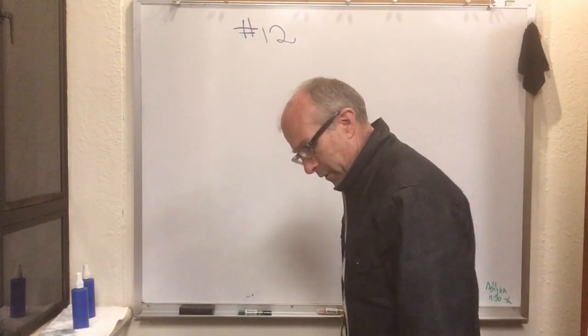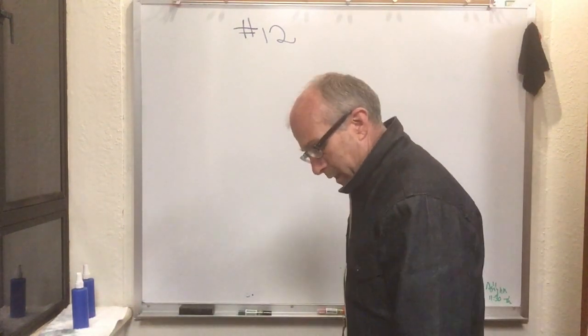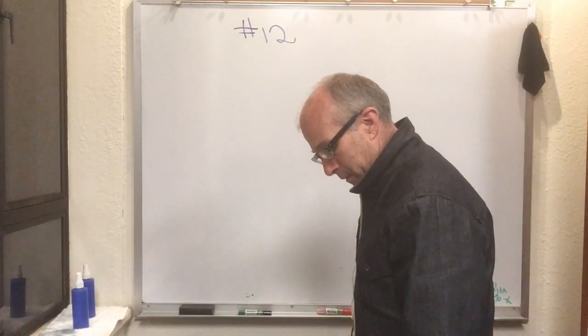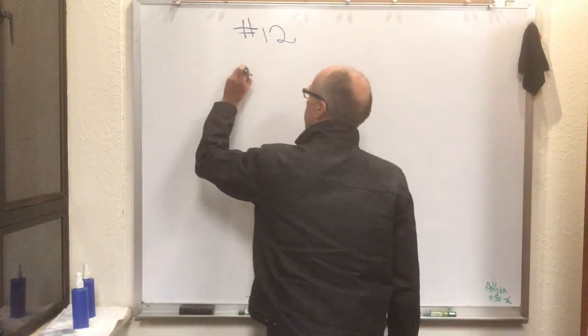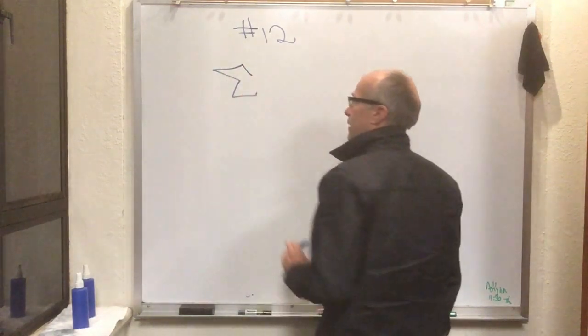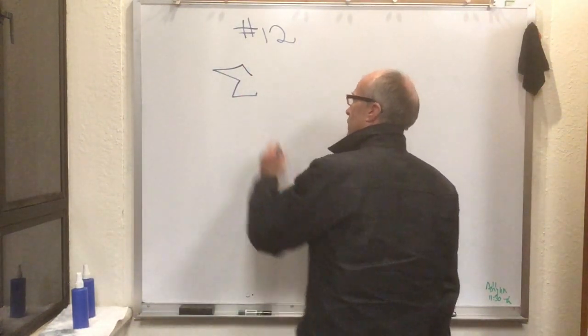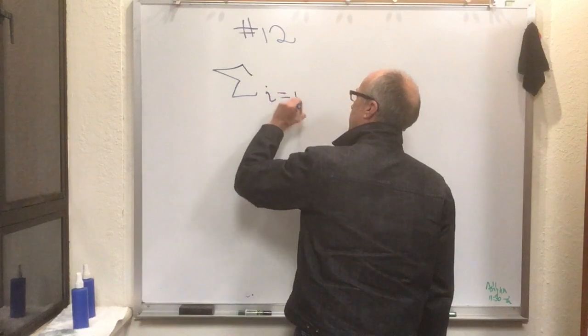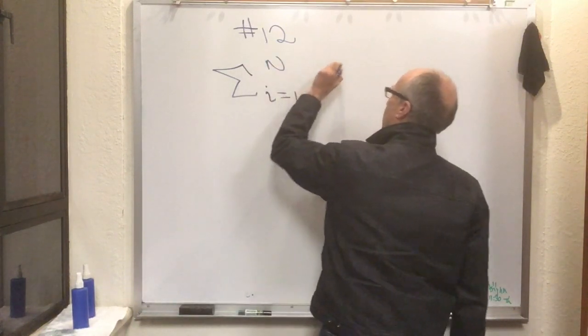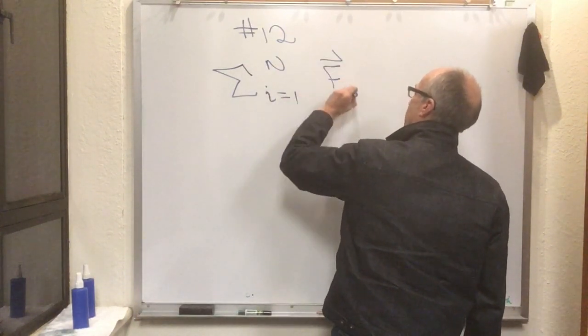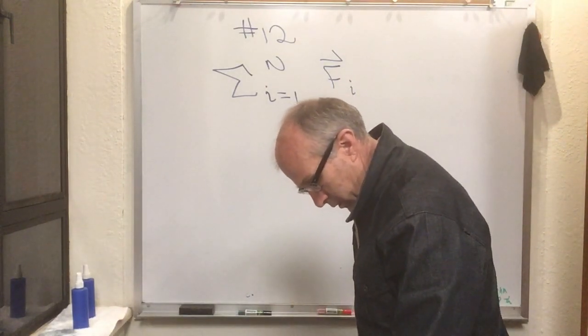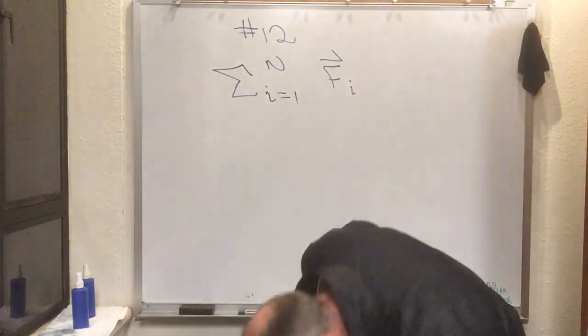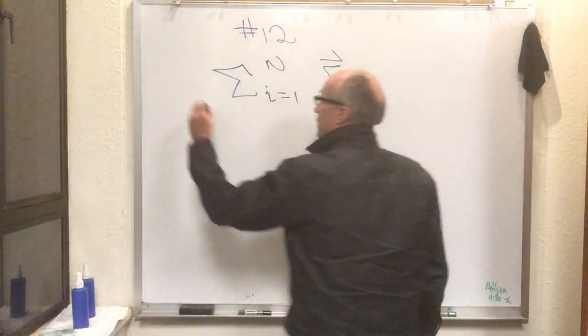So the very first thing that's here is a pretty nasty looking equation, and it's equation 5.1. It says that the sum i equals one to n of F sub i is an important combination, and he's going to call that sum F net.